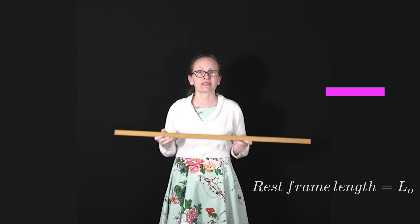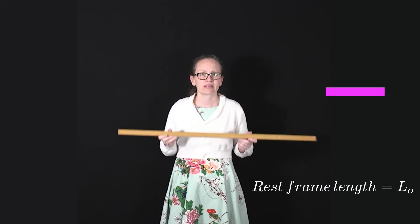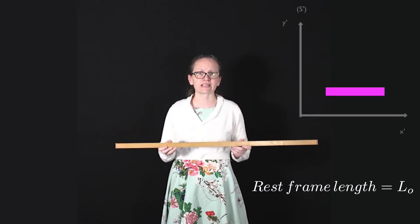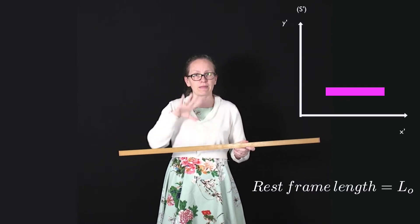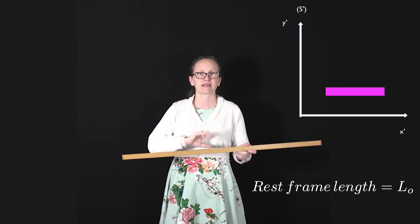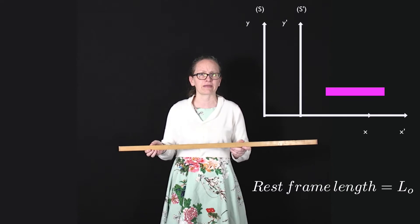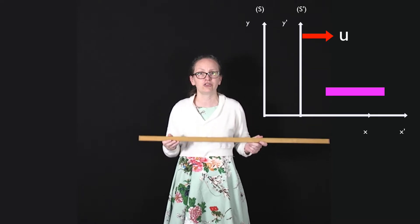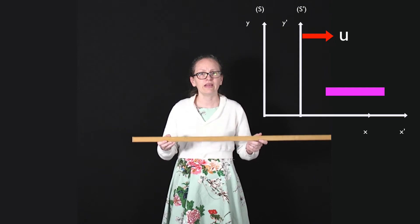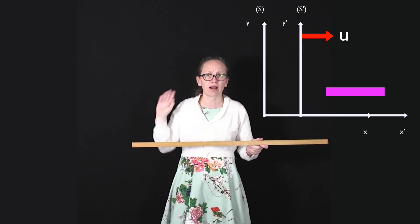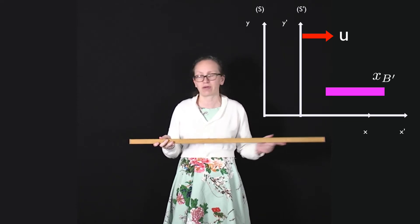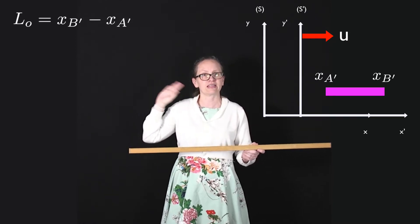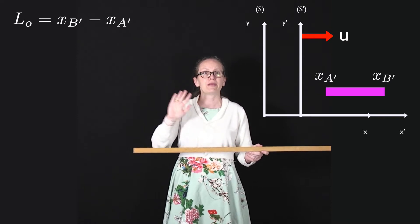Let's consider a stick which has a length L₀ in its rest frame. The rest frame is the frame in which the stick does not appear to be moving. We'll call the rest frame of the stick the primed frame, so S-prime is the frame in which this stick appears to be at rest. In the rest frame, one end of the stick is at x_b prime and the other at x_a prime, and the length is L₀, so L₀ equals x_b prime minus x_a prime.